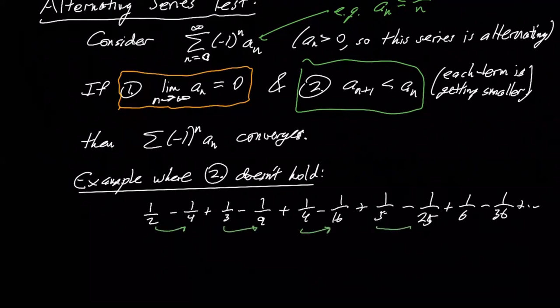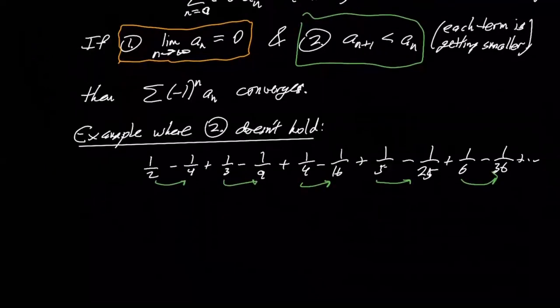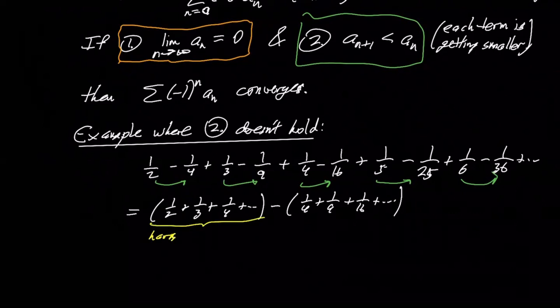And this does not converge because we could rearrange this into a half plus a third plus a quarter plus so on minus a quarter plus a ninth plus a sixteenth plus so on. And we know, and this is basically the first term of the harmonic series. So that diverges.